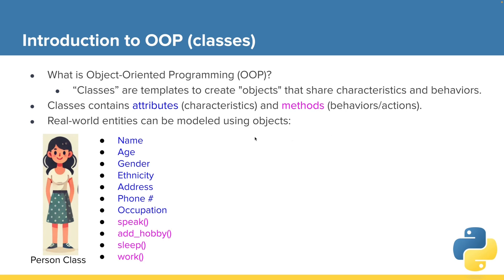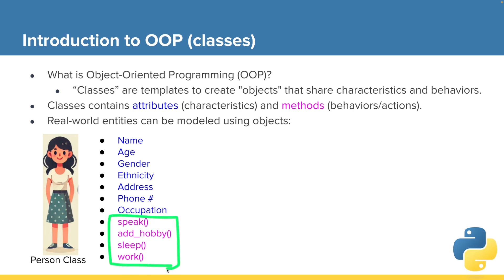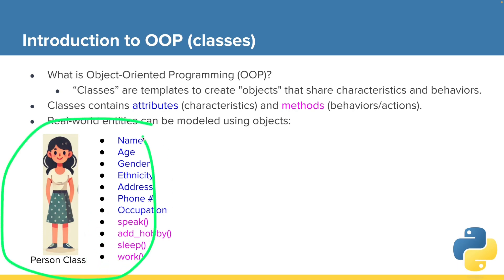We could break this down with just a few examples of attributes and methods of what makes a person class. We could define characteristics we want to know about a person — those would be our attributes. And we could say we want our person to be able to do certain things, to have capabilities — these methods or behaviors and actions: speak, add hobby, sleep, and work. So this defines our person class — it's our template for what we care about with our people objects.